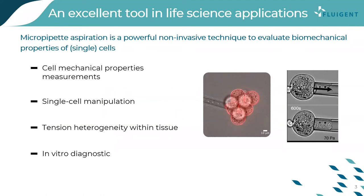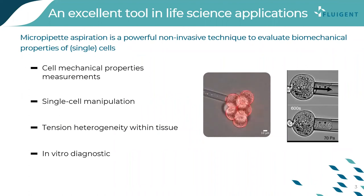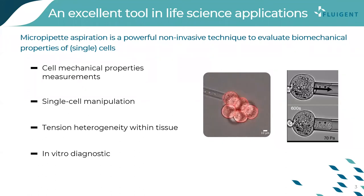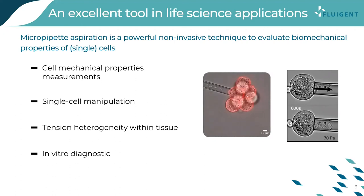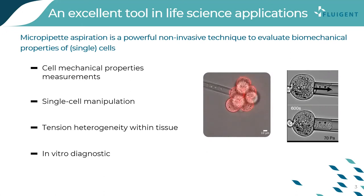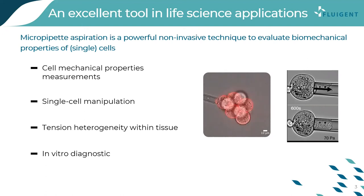Micropipette aspiration is a powerful non-invasive technique that allows evaluation of biomechanical properties of single or even multiple cells. It can be used for cell mechanical property measurements. Many biological processes are characterized by changes in cell stiffness — for instance, cells entering mitosis or sickle cell disease, which affects red blood cells. These mechanical changes occur at the cell scale and require precise measurements to accurately quantify stiffness changes.